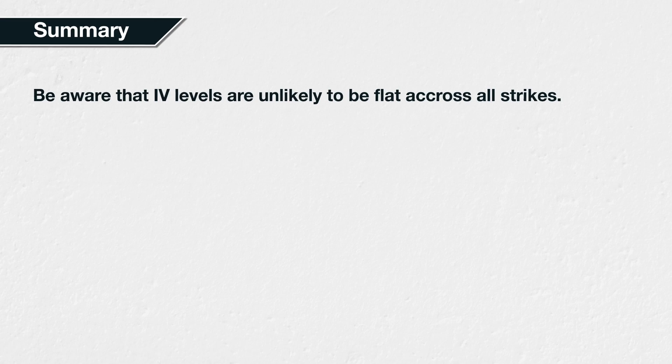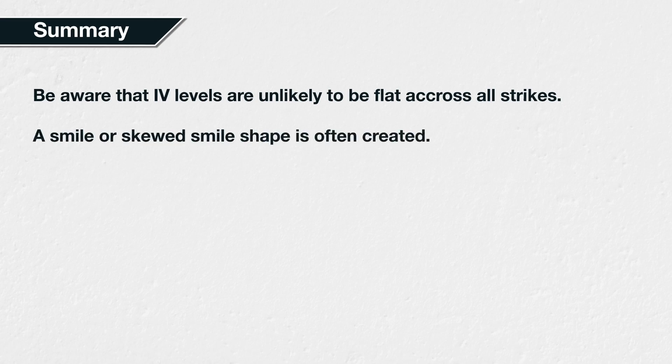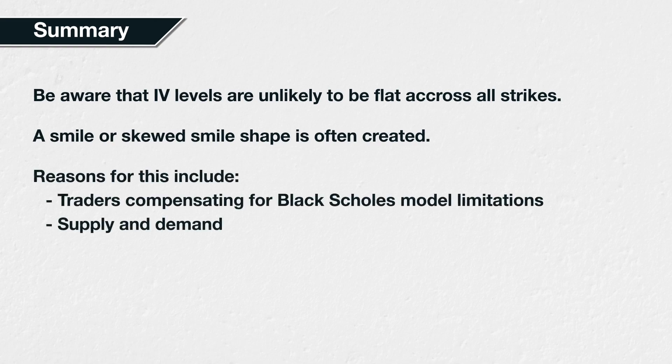In summary, while it's not always necessary to know all the maths behind it, it is useful to be aware that implied volatility levels are unlikely to be flat across all strikes on a given expiry. They will often create a smile or skewed smile shape, with the lowest point usually being at or close to the at-the-money strike. It's also useful to be aware of the possible reasons for this — traders compensating for fatter tails in the distribution of returns, as well as current sentiment affecting supply and demand for calls and puts.